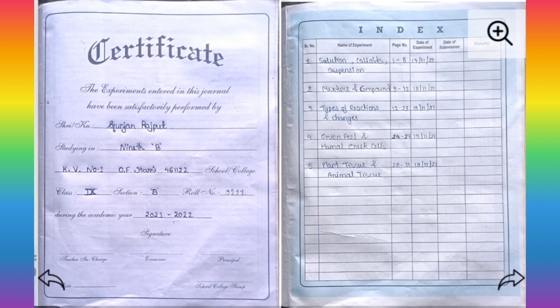On the next page, I made an index. In index, I write experiment number, name with its date. I also write page number because with the help of page number, we will easily find any experiment in notebook.